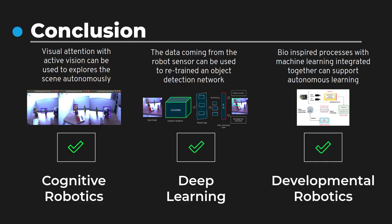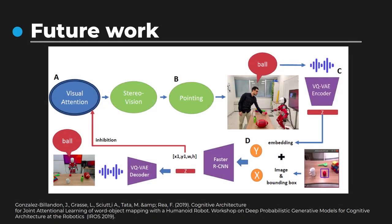With this work, we believe this could be a solution to one limitation of deep learning: the need for annotated data when adapting to new objects and environments. We are aware of the limitations of our architecture, especially the failure to produce good data for small objects. To address this issue, we will in the future improve our segmentation mechanism to account for other features such as color or texture. This work was also a validation step toward a more complex architecture for long-life learning with robotic platforms.